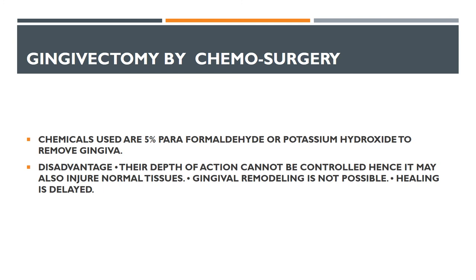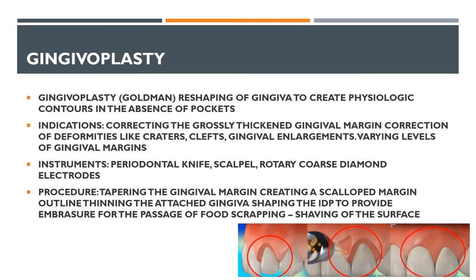Gingivectomy by chemo surgery uses chemicals such as 5% paraformaldehyde or potassium hydroxide to remove the gingiva. Disadvantages: depth of action cannot be controlled, so it may injure normal tissues; gingival remodeling is not possible; and healing is delayed. Because of these drawbacks, chemo surgery is not commonly used nowadays.